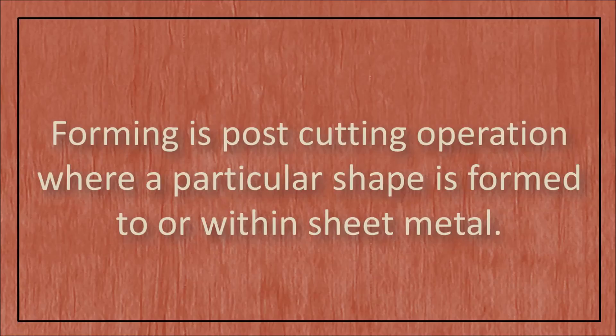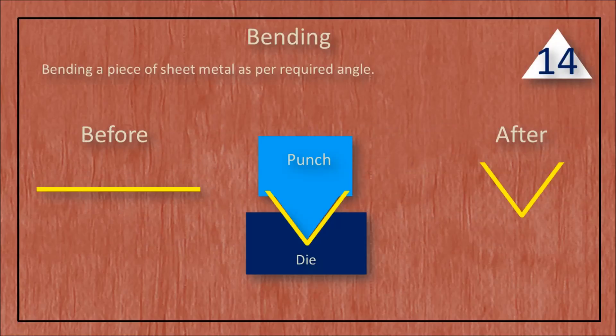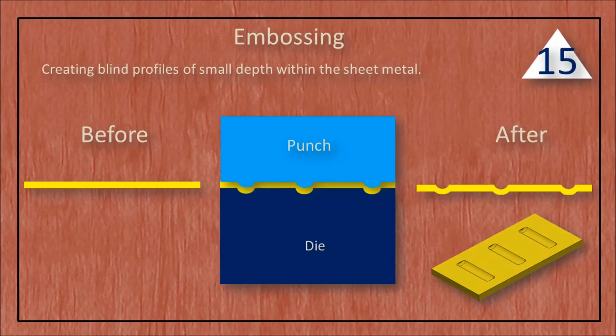Bending is the process of shaping a piece of sheet metal to a desired angle. Embossing is the process of creating blind profiles of small depth within the sheet metal.